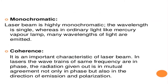The next characteristic is monochromaticity — as the name indicates, 'mono' means single wavelength. Laser beam is highly monochromatic, meaning it has a single wavelength, whereas ordinary light sources like a mercury vapor lamp emit many wavelengths.